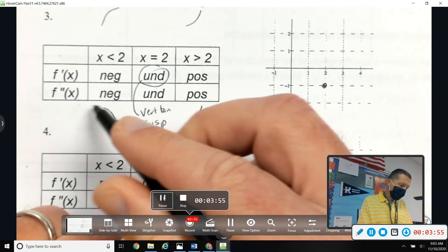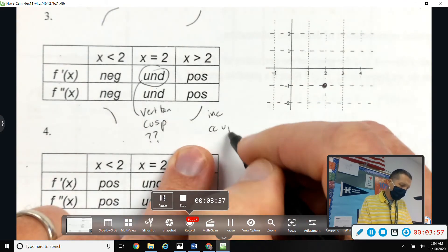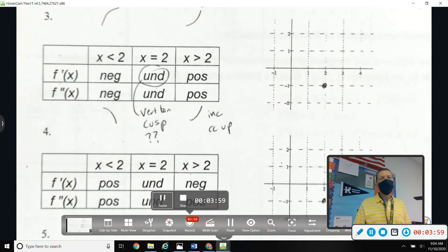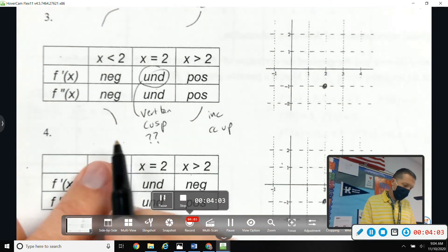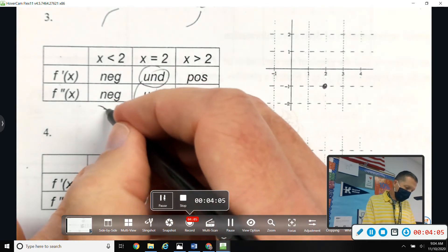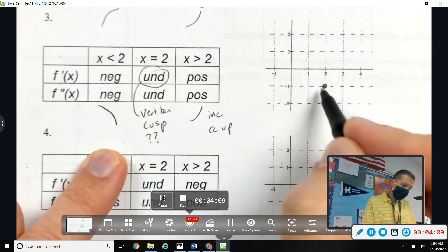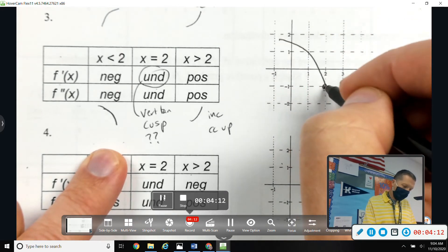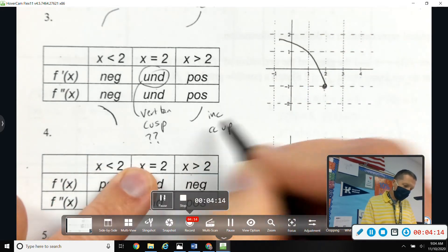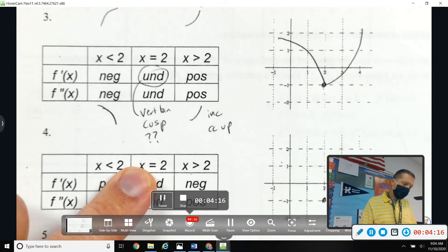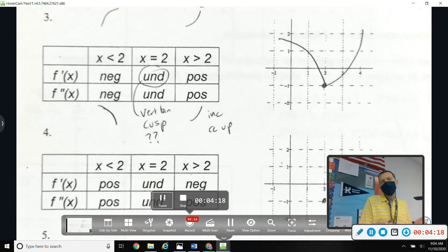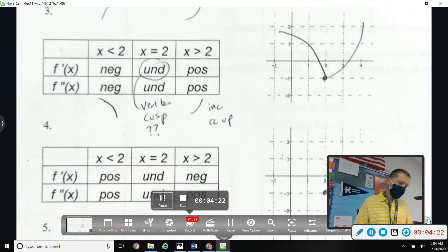I almost can't help but write it. F double prime positive is concave up, so writing it out helps me figure out what the picture looks like. So I need to do this part up to - I still got to land it at 2, negative 1. Something like that. And then on the other side, increasing concave up. And that makes sense now because that's a cusp.